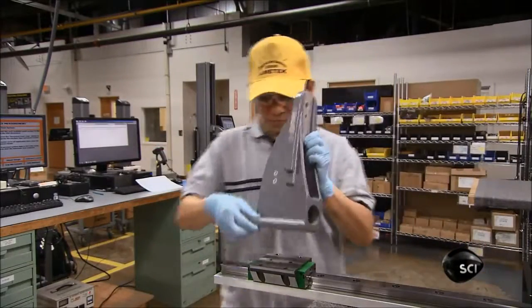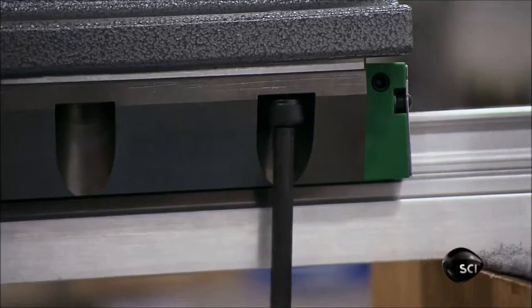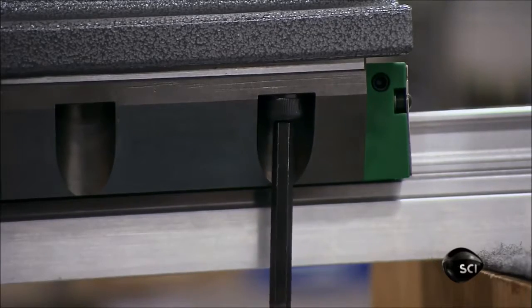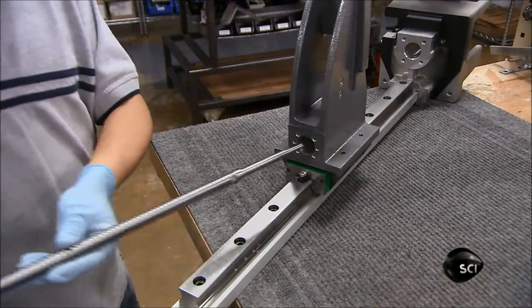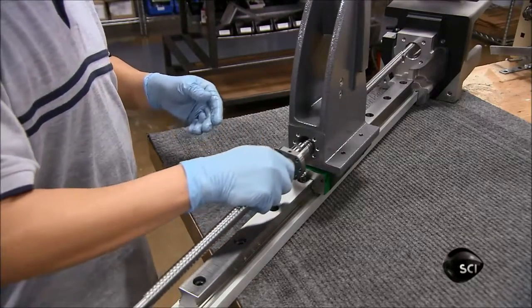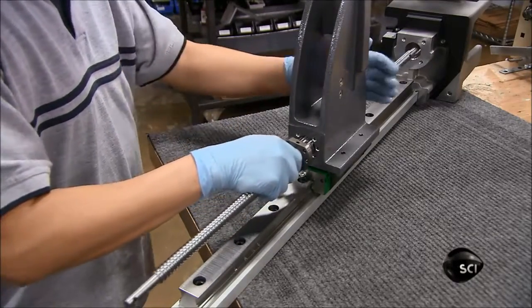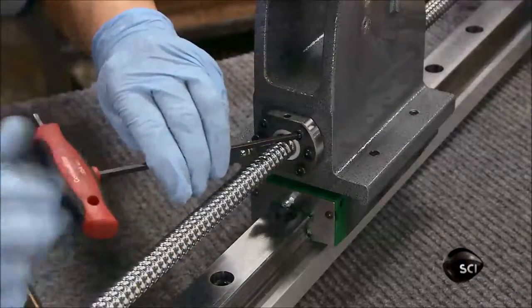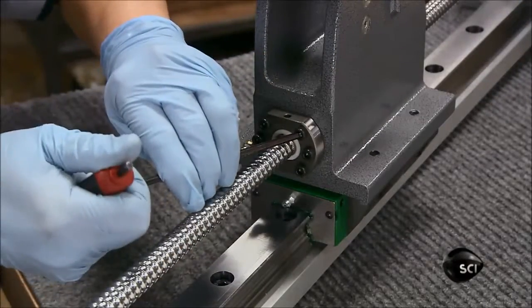He's now ready to mount the force arm to the shuttle. He inserts a long threaded rod, known as a lead screw, into the force arm and fastens it to it. The lead screw will rotate to move the force arm up and down.